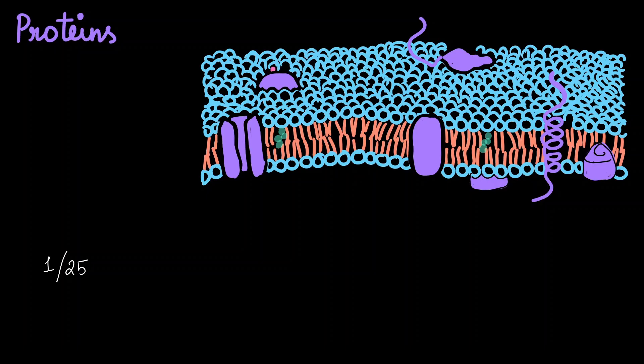This lipid-to-protein ratio depends on what the cell actually does. For example, the inner membrane of mitochondria has one protein for every 15 phospholipids, which makes sense because that membrane is quite busy with many biochemical reactions happening there. On the other hand, myelin, which acts as an electrical insulator, has only one protein for every 70 lipids — logical, because being an insulator requires more lipids than proteins.